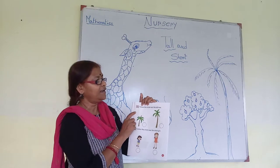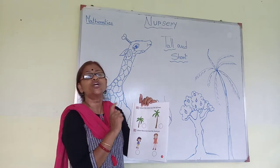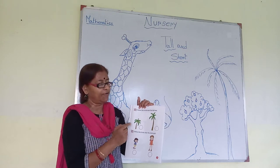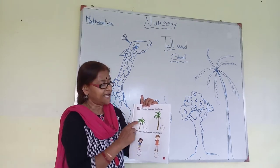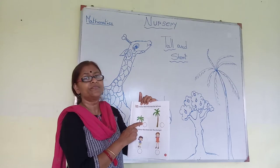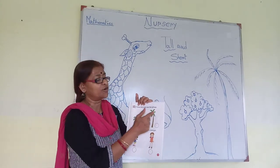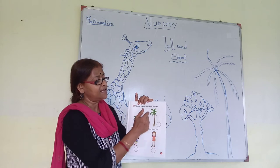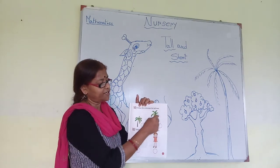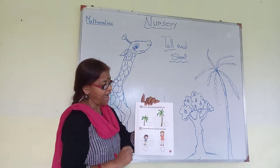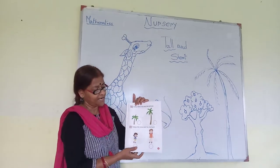If I say to you: color the short tree, you will color this tree. Circle the short tree and cross out the tall tree. You will cross the tall tree and circle the short tree.